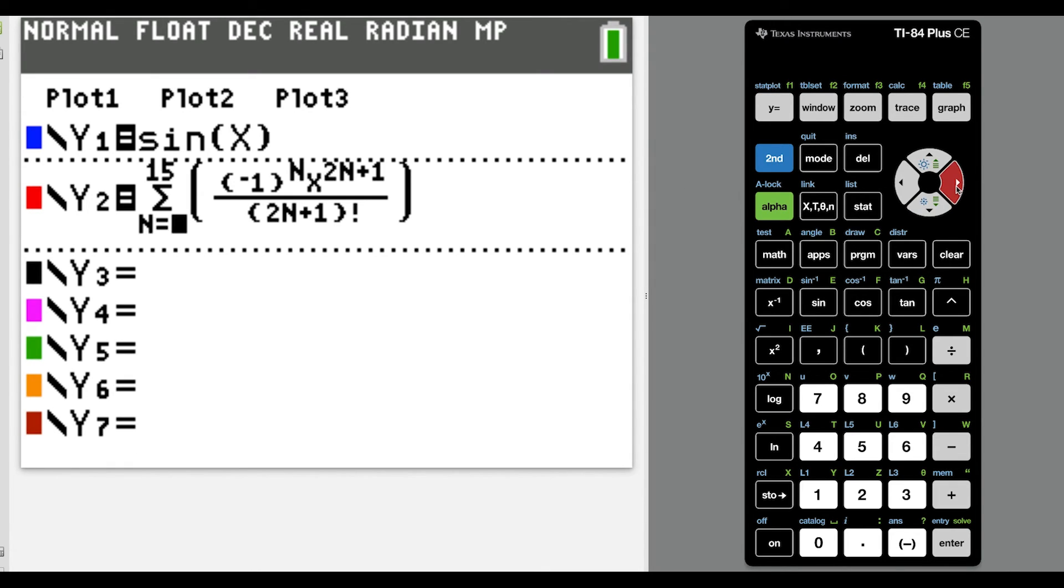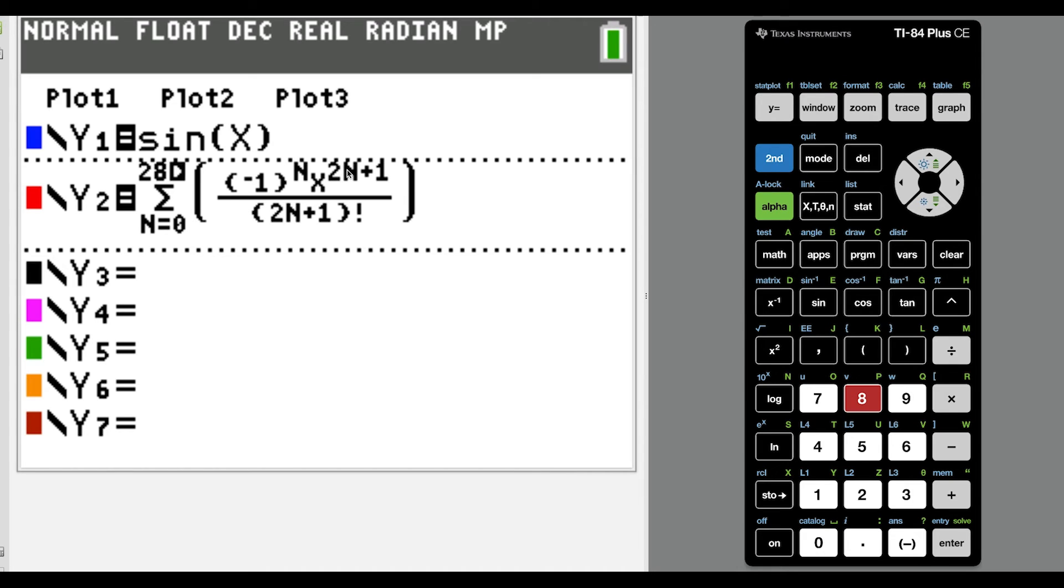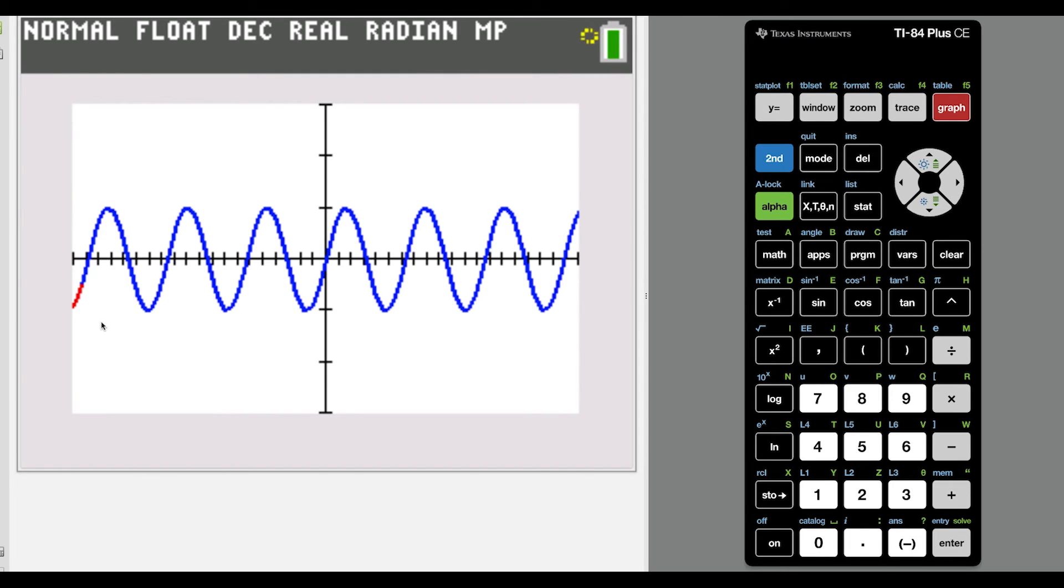So let's say I really went overboard here. I don't know if the calculator could handle this, but let's say I go out to 28. That would give me 56 plus 1, which would give me a 57th degree Taylor polynomial centered at 0. And look, the calculator can handle it. And this would be enough for us to cover this entire space here from negative 20 to 20.